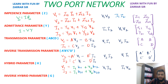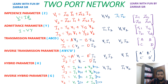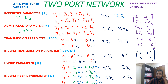Similarly, in the inverse hybrid parameter, we calculate I1 and V2 — the inverse of the hybrid case. So: I1 = G11·V1 + G12·I2, and V2 = G21·V1 + G22·I2. The G parameters are G11, G12, G21, and G22. You can see that one parameter and the other are reciprocal to each other — V1 and V2 swap roles, just as I1 and I2 do.